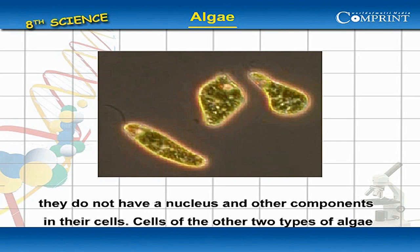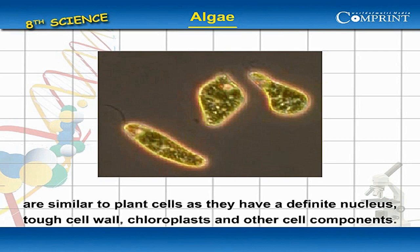Cells of the other two types of algae are similar to plant cells, as they have a definite nucleus, tough cell wall, chloroplasts, and other cell components, as shown in figure 2.6.